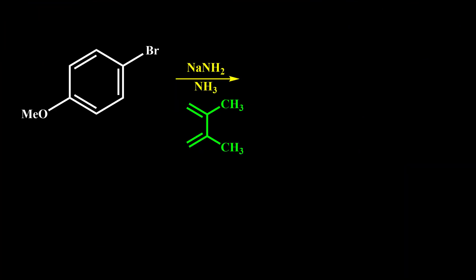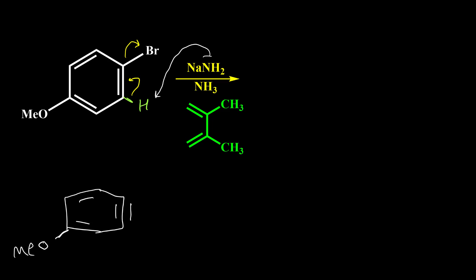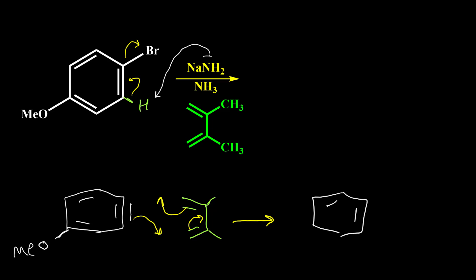Here is an example for capturing of benzyne intermediate by Diels-Alder reaction. This hydrogen can be removed by NH2⁻ and then we have formation of the benzyne ring. Benzyne is a very good dienophile and it can easily react with the diene. We have a Diels-Alder reaction: this pi bond moves here, this pi bond moves here, and this pi bond moves here, giving us a product where we have an ortho-methoxy group and a new ring attached to the benzene ring.